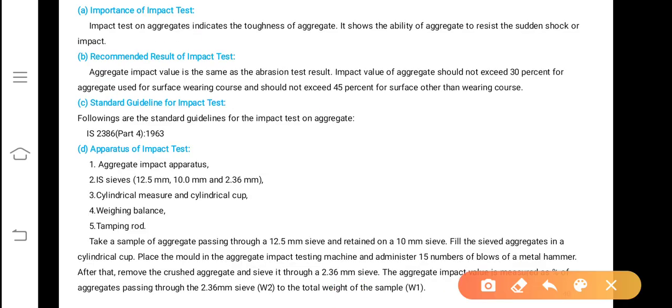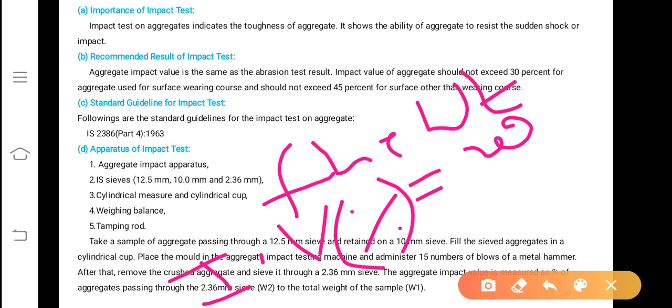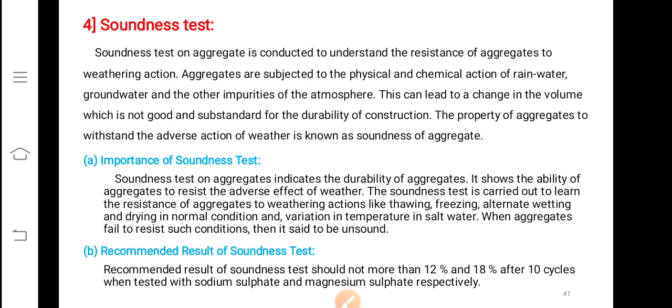After you find the fine weight passing through 2.36mm IS sieve, you can find impact value in percentage. Impact value in percentage is equal to weight of fines passing through 2.36mm IS sieve divided by capital W, that is the total weight of the aggregate taken, multiplied by 100 in percentage. Further, the suitability with respect to which course it can be used we will study in detail in the practical class, otherwise it becomes unnecessarily over teaching for you.